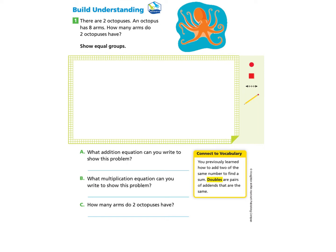We will start under Build Understanding, question one. As usual we will read the question and highlight and circle the important information. There are two octopuses — that's important. An octopus has eight arms, so we'll underline that.